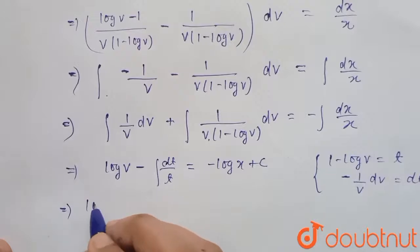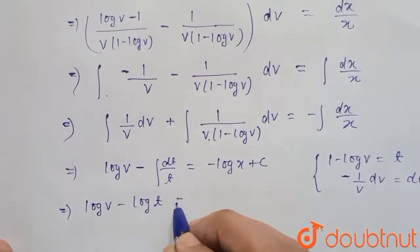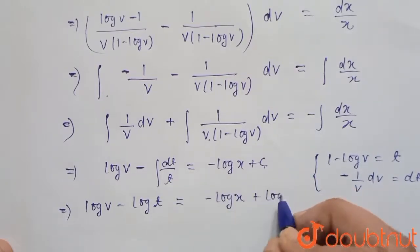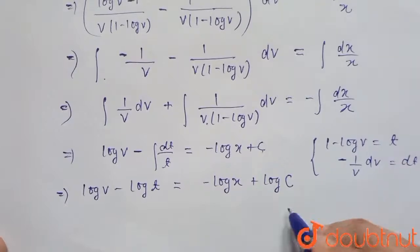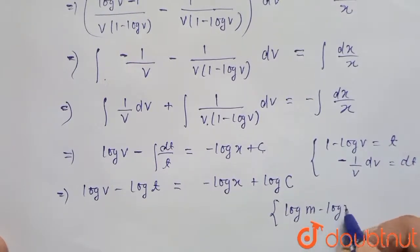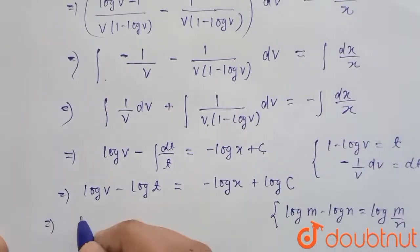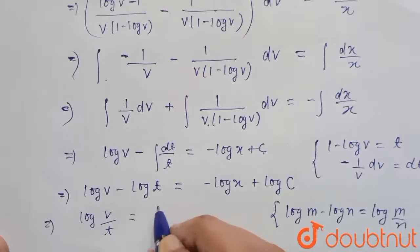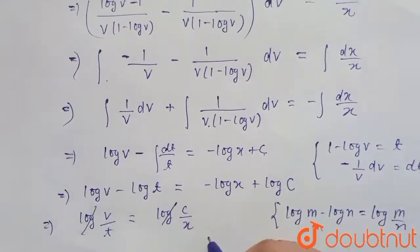We write c as log c. By the log property log m minus log n equals log(m/n), this becomes log(v/t) equals log(c/x). Cancelling the logs on both sides gives v/t equals c/x.